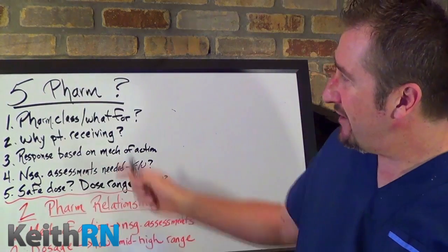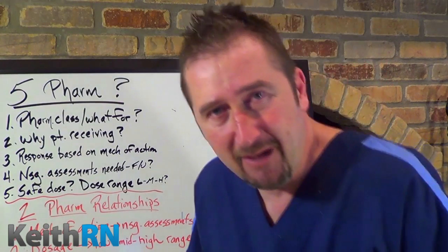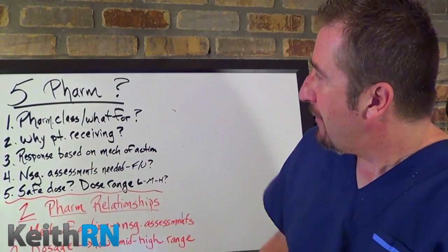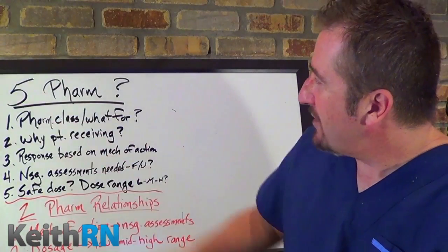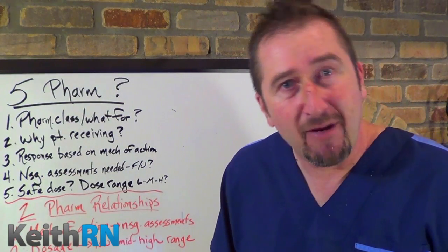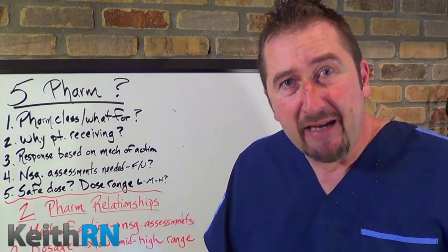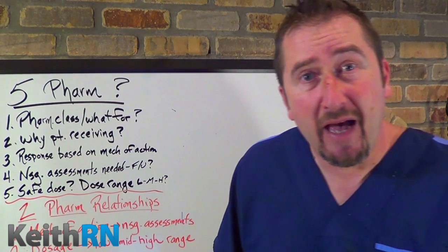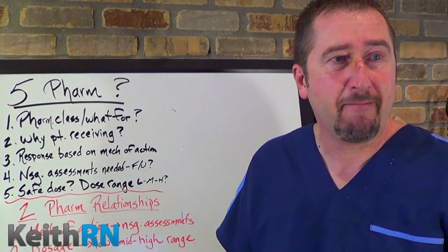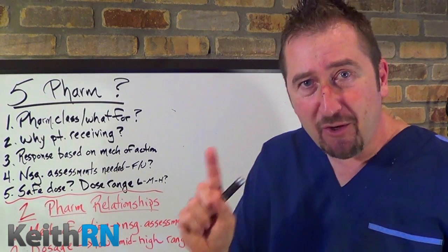Let's go to our first question. Using the example of atenolol 50 milligrams: Number one, what's the pharm class and what is it for? We know that atenolol is a beta blocker and it's used for hypertension, angina, and maintenance for those who have had an acute myocardial infarction. If a student can give me that information, we're good.